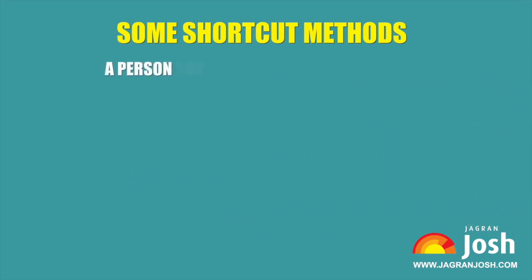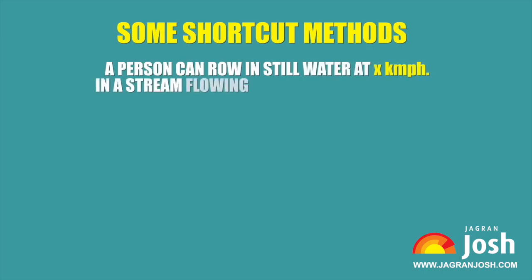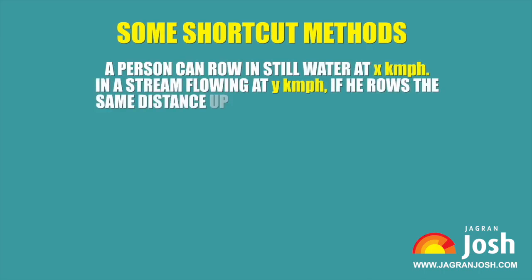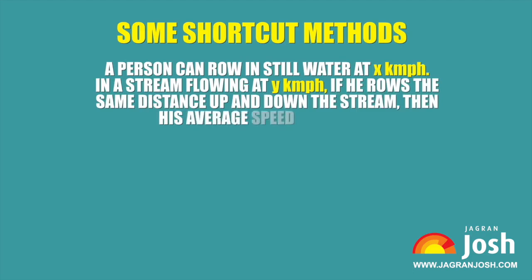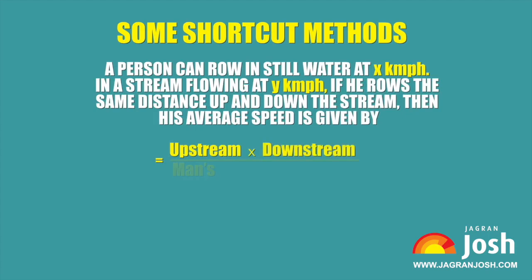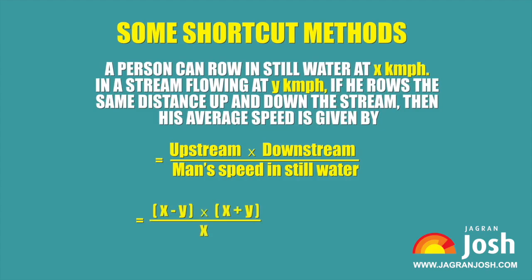Shortcut Method 3: A person can row in still water at x km per hour. In a stream flowing at y km per hour, if he rows the same distance up and down the stream, then his average speed is given by: (upstream × downstream) / (man's speed in still water) = (x − y)(x + y) / x = (x² − y²) / x km per hour.